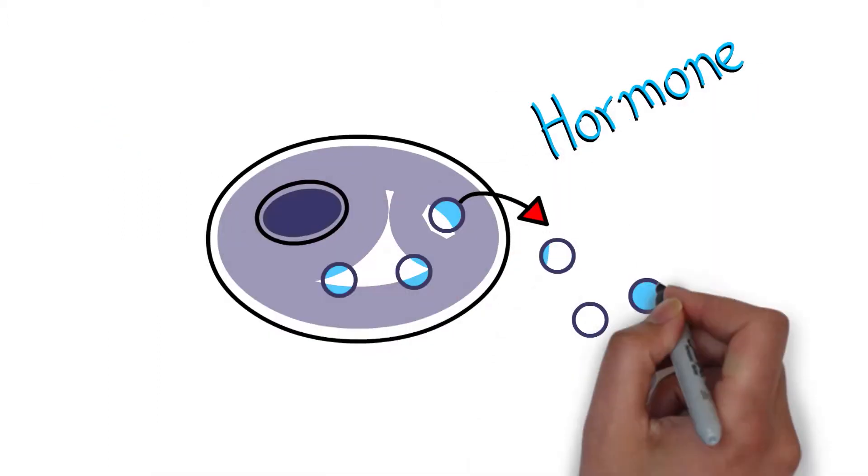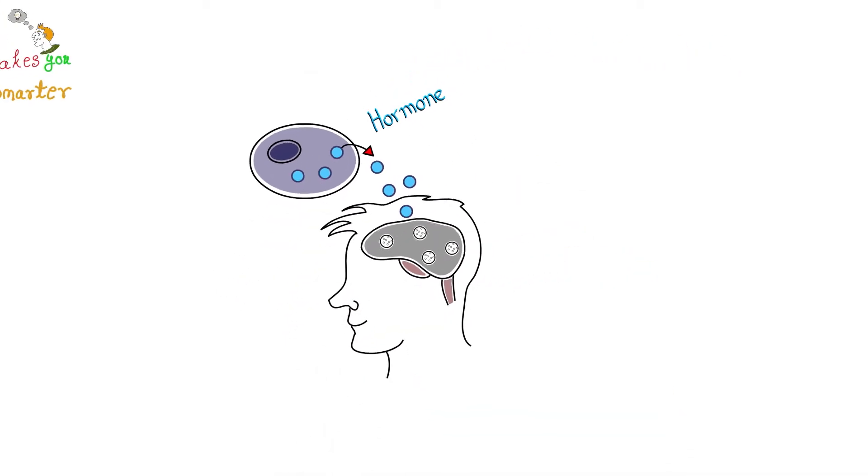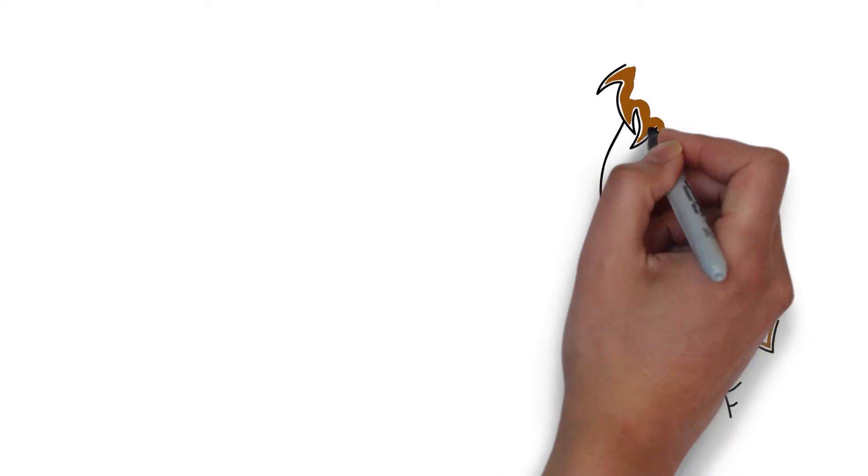When you have sex, your brain gets a cocktail of hormones and neurotransmitters, including oxytocin (the bonding hormone), dopamine (the feel-good hormone), and serotonin (the serenity hormone), among others.